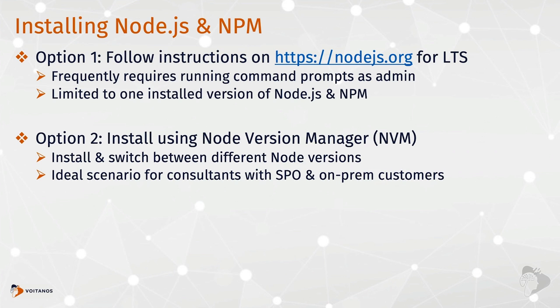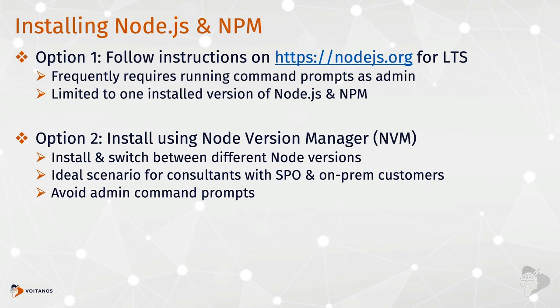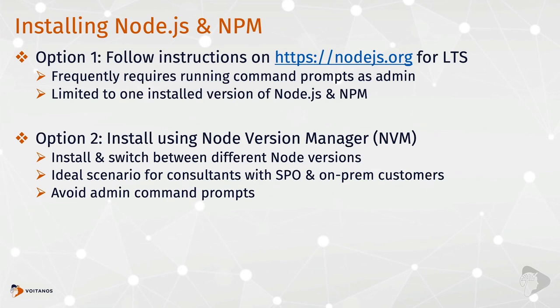SharePoint Online supports the latest SharePoint Framework version. As of 2021, that means Node.js LTS version 14, Gulp v4, Yeoman v3, and the Yeoman generator for SharePoint Framework 1.12.1. But for SharePoint Server 2019 work, you'd need Node.js LTS v8, Gulp v3, and any Yeoman generator from versions 1.4.1 to 1.10. SharePoint Server 2019 only supports SharePoint Framework 1.4.1, and the latest version of Node that supports is LTS v8.